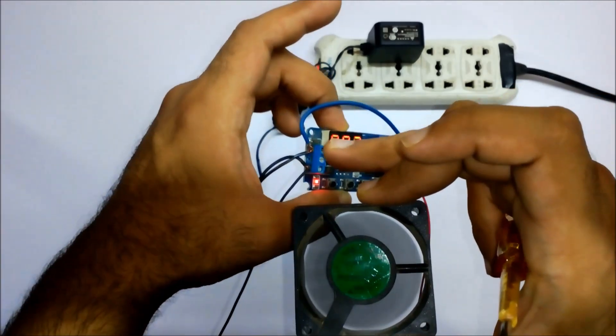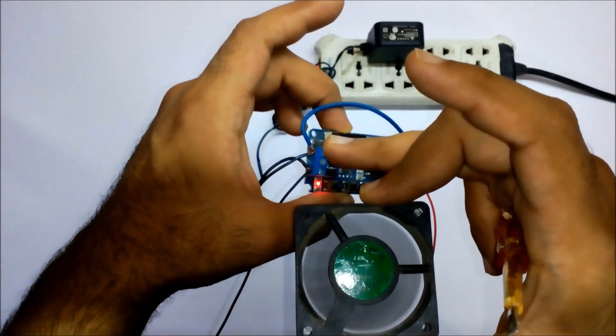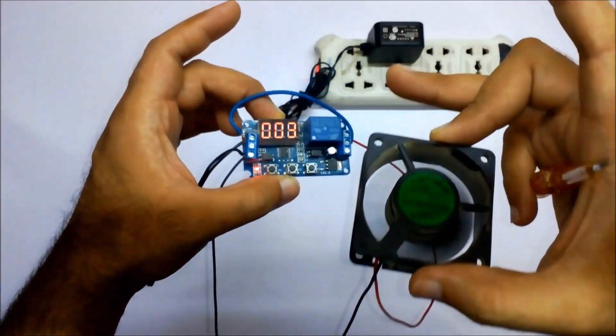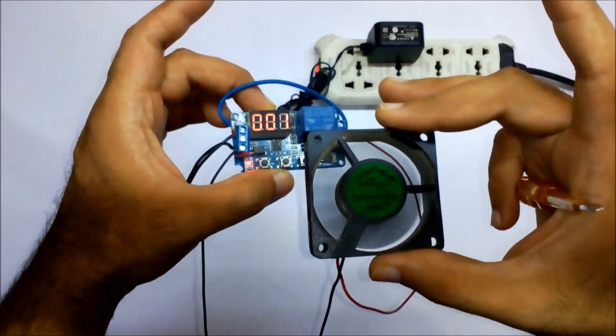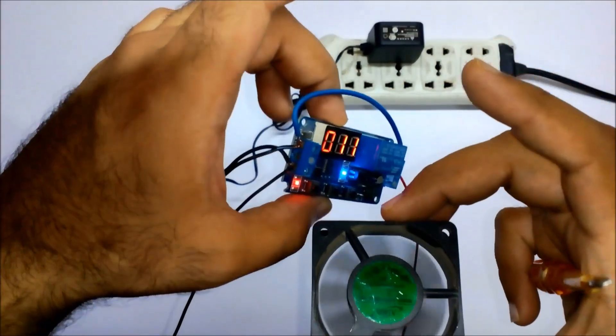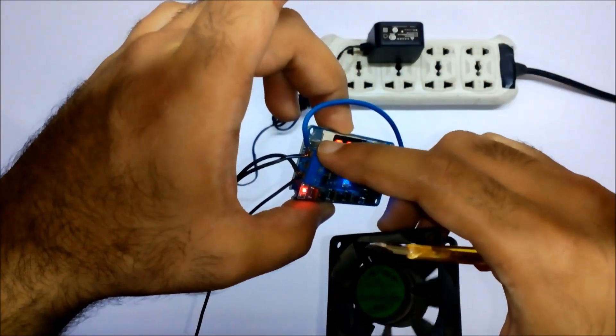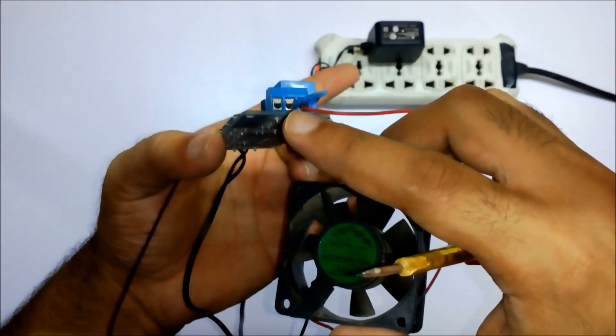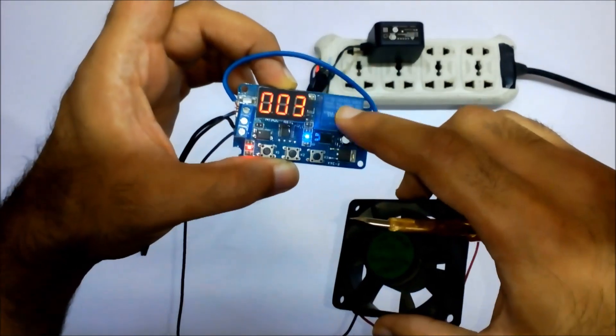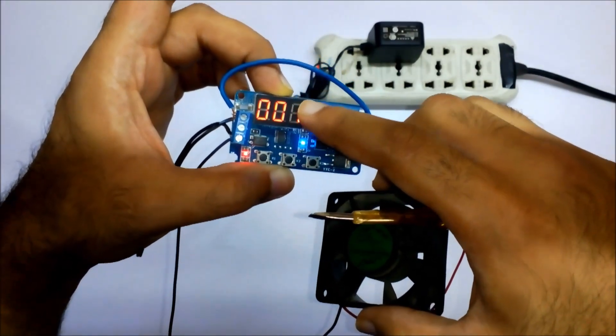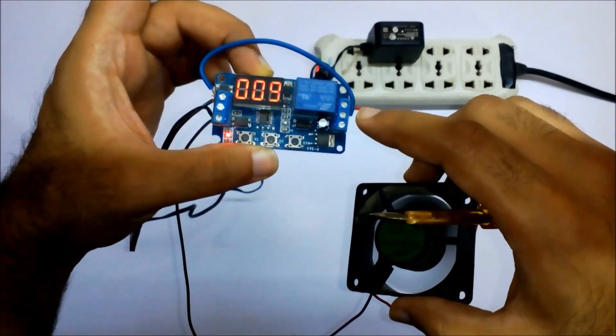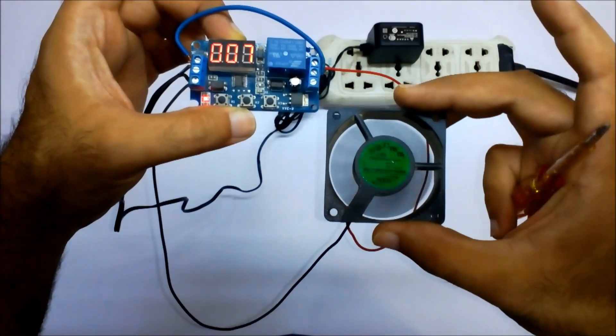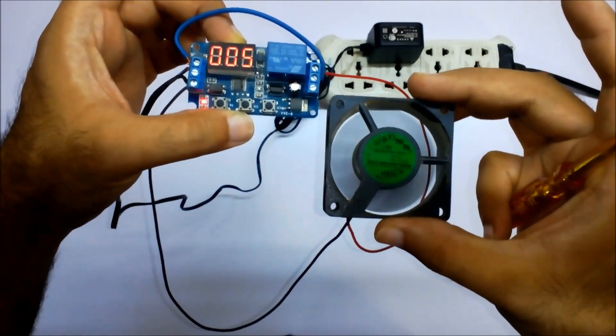...set it so it is also getting 12 volts over here. And it will trip off by this. When it turns on, it will turn on. It is getting ground current all the time but getting 12 volts when it is switching. So this was a very simple wiring to make.